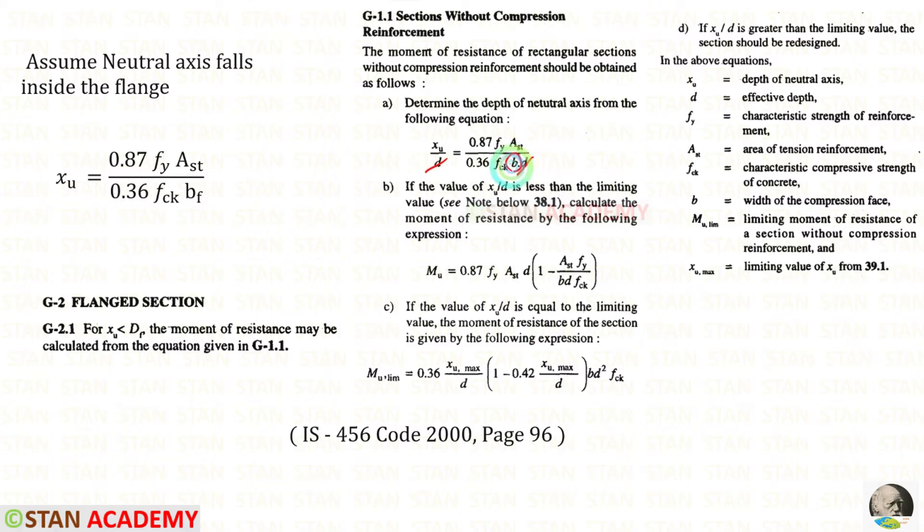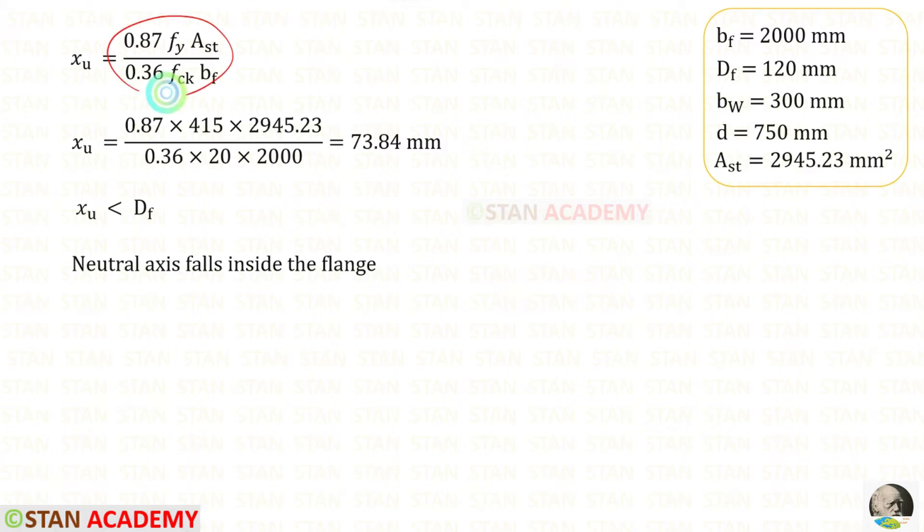Instead of B, we have to apply BF, that is the width of the flange. In this we can apply all of the values. We will get 73.84 millimeter.